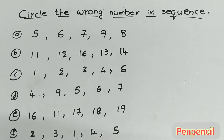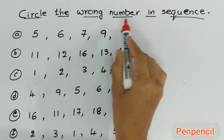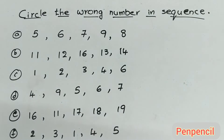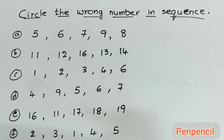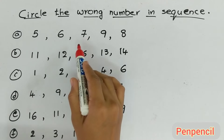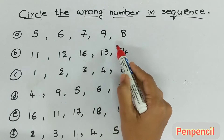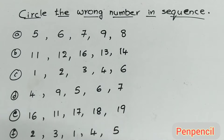Hello kids, welcome to Pen Pencil. Hope you're all doing great. Today we are learning wrong number in the sequence. What we have to do is circle the wrong number in the sequence — we have to find out the wrong number. Before that, if you are new to this channel, please like, share and subscribe. Also hit the bell icon to get notifications for new videos.